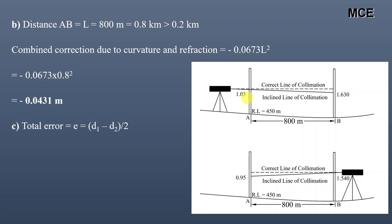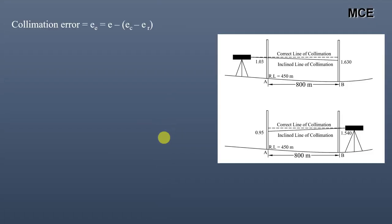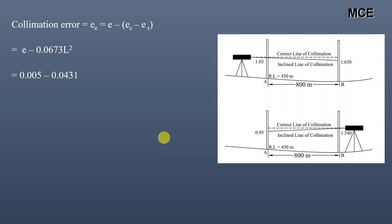The total error due to collimation plus curvature and refraction is given by half the difference of the apparent differences: (D1 − D2) / 2 = (0.6 − 0.59) / 2 = 0.005 m. The collimation error alone is: total error minus combined curvature and refraction correction = 0.005 − 0.0431 = −0.0381 m.